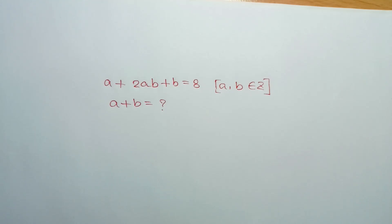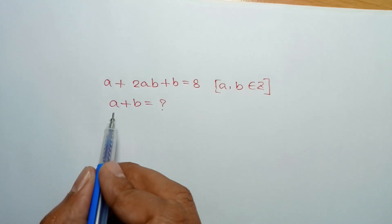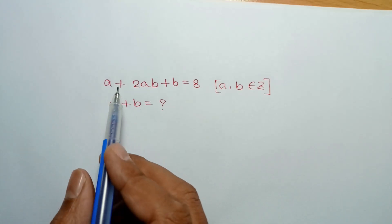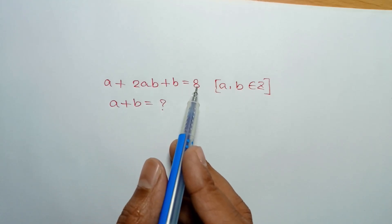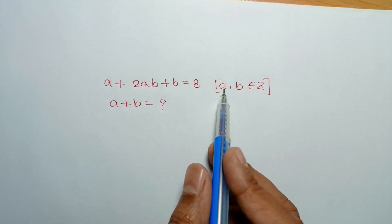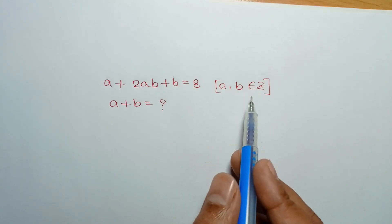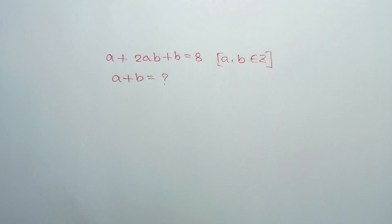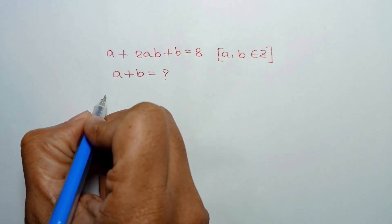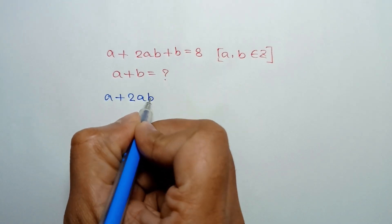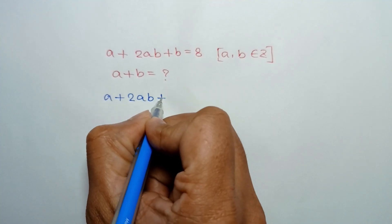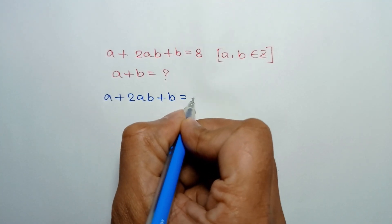Hi everyone. In this video, I am going to show how to find the value of a plus b, where a plus twice ab plus b is equal to 8, and a and b are integers. We have given a plus twice ab plus b is equal to 8.